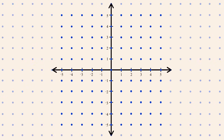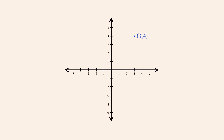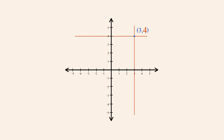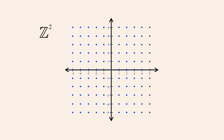We can locate the positions of these points using a pair of number lines. For each ordered pair, the first element corresponds to a position on the horizontal number line and the second element corresponds to a position on the vertical number line. The points formed by the Cartesian product of the set of integers with itself form an infinite grid of points, spaced one unit apart.